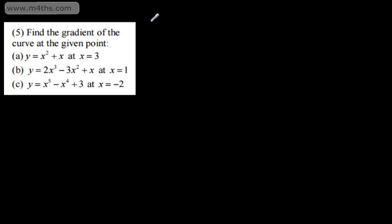We're going to work through some examples looking at finding the gradient at a given point, or questions very similar. So let's start off with the first one. Question 5 says find the gradient of the curve at the given point — we're looking at the gradient of a tangent at a given point. y is equal to x squared plus x.